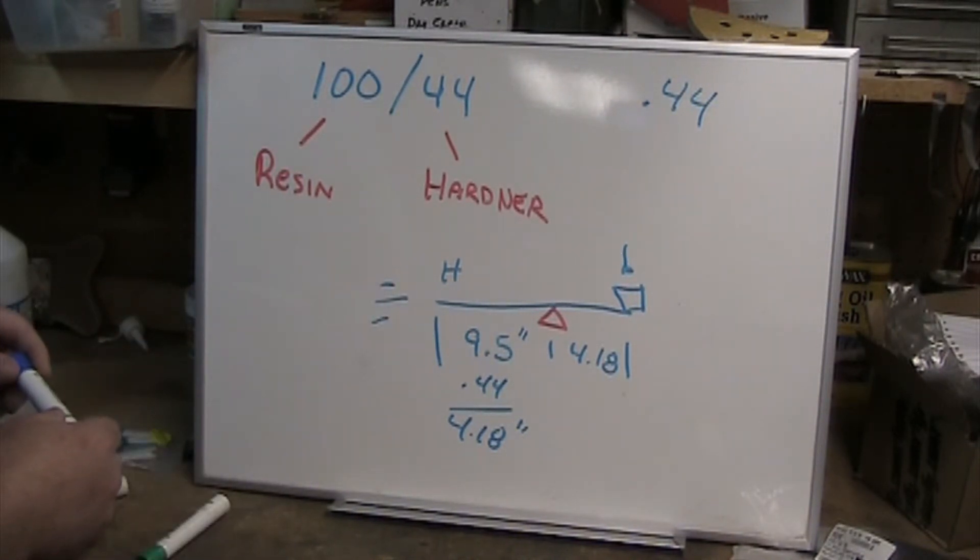Whenever that balance is out, we'll have the right amount of resin for whatever the amount of hardener that we've put in there. Let's take a look at the scale and how that applies.